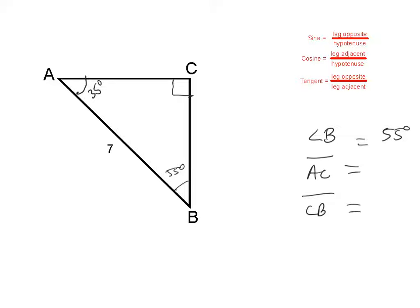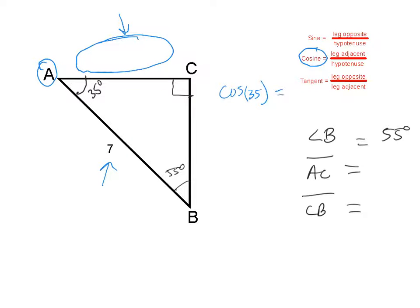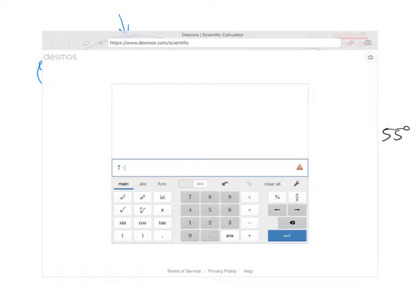Now let's find one of our missing sides — let's start with AC. Let's pick angle A right next to it. Compared to angle A, we've got the hypotenuse and an adjacent side, so we'll choose cosine. Cosine of 35 equals the adjacent side X over the hypotenuse 7. Multiply both sides by 7, and we get 7 times cosine of 35 equals X. Doing that on the calculator, 7 times cosine of 35 gives us about 5.7 rounded to one decimal place.